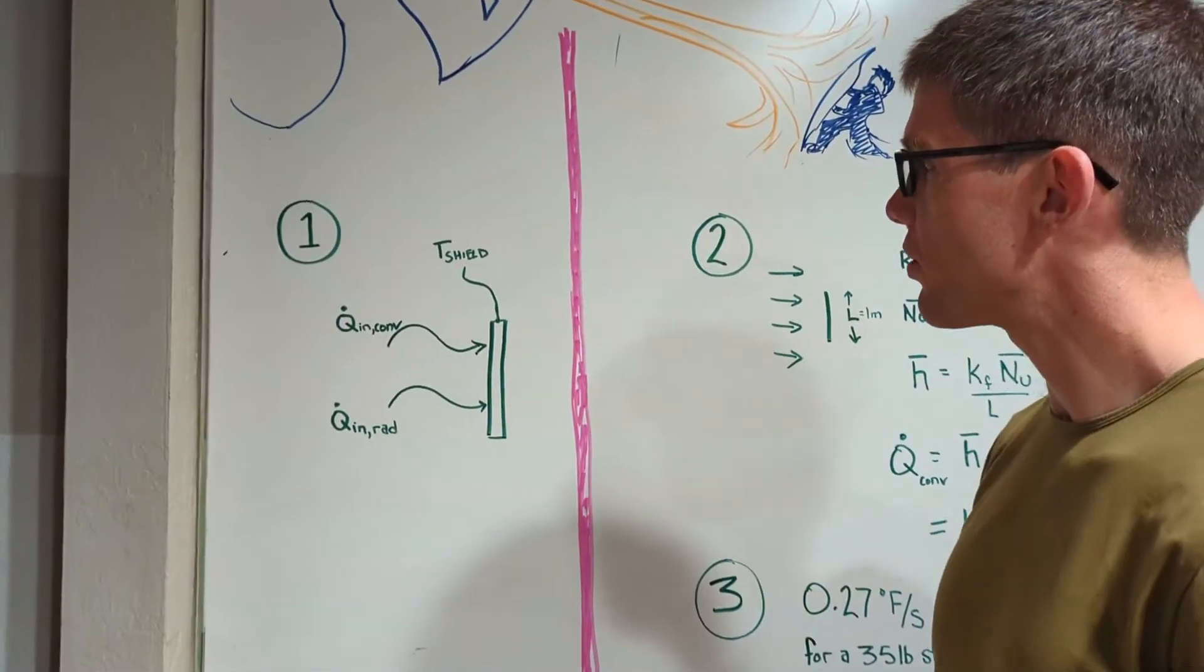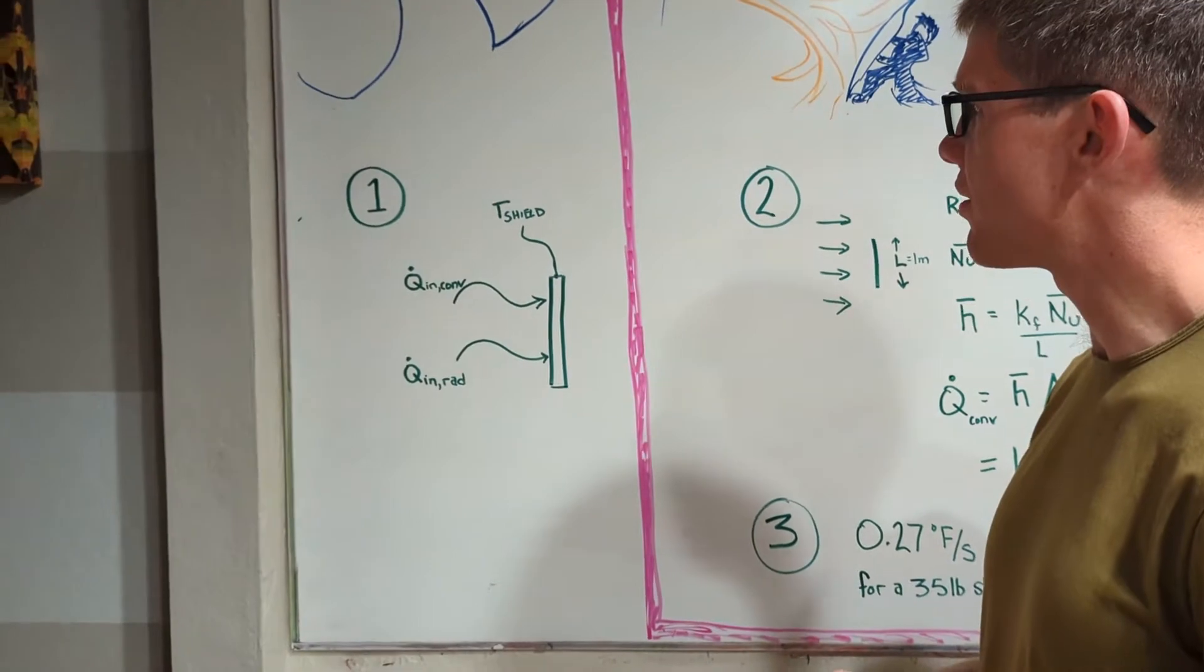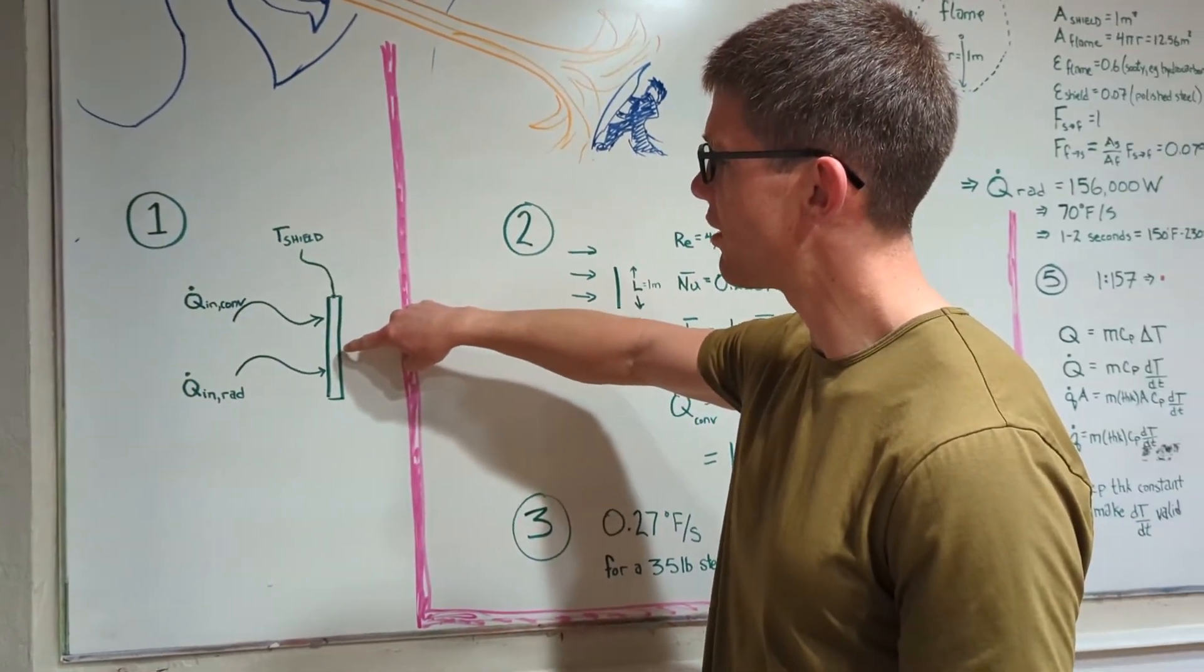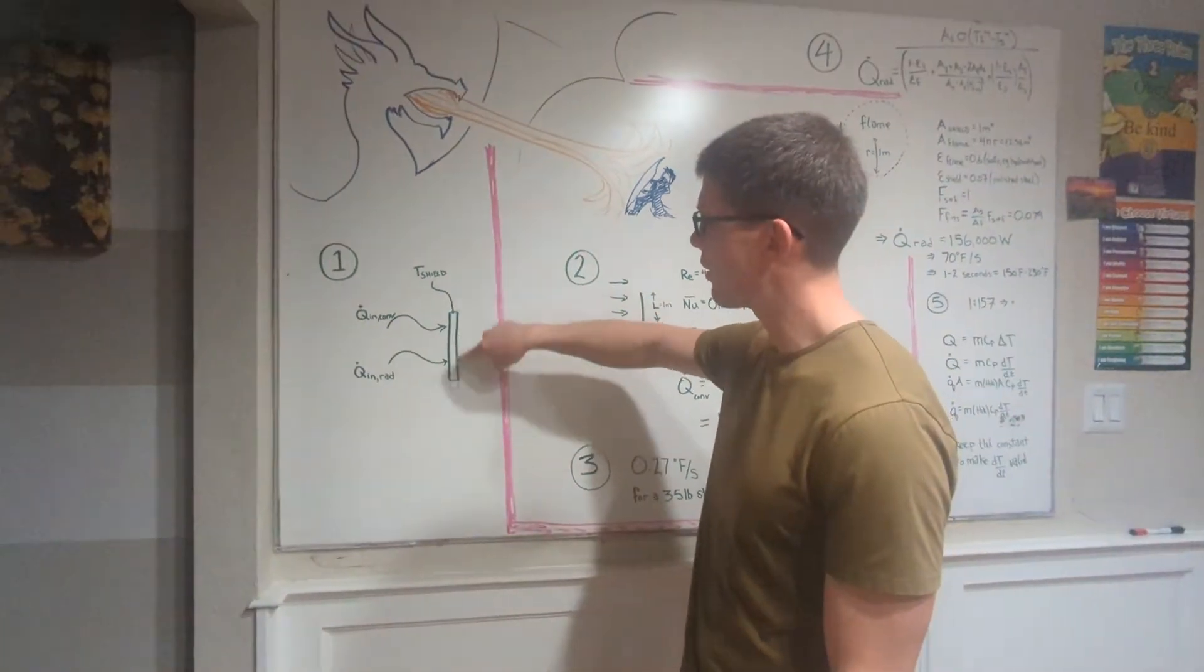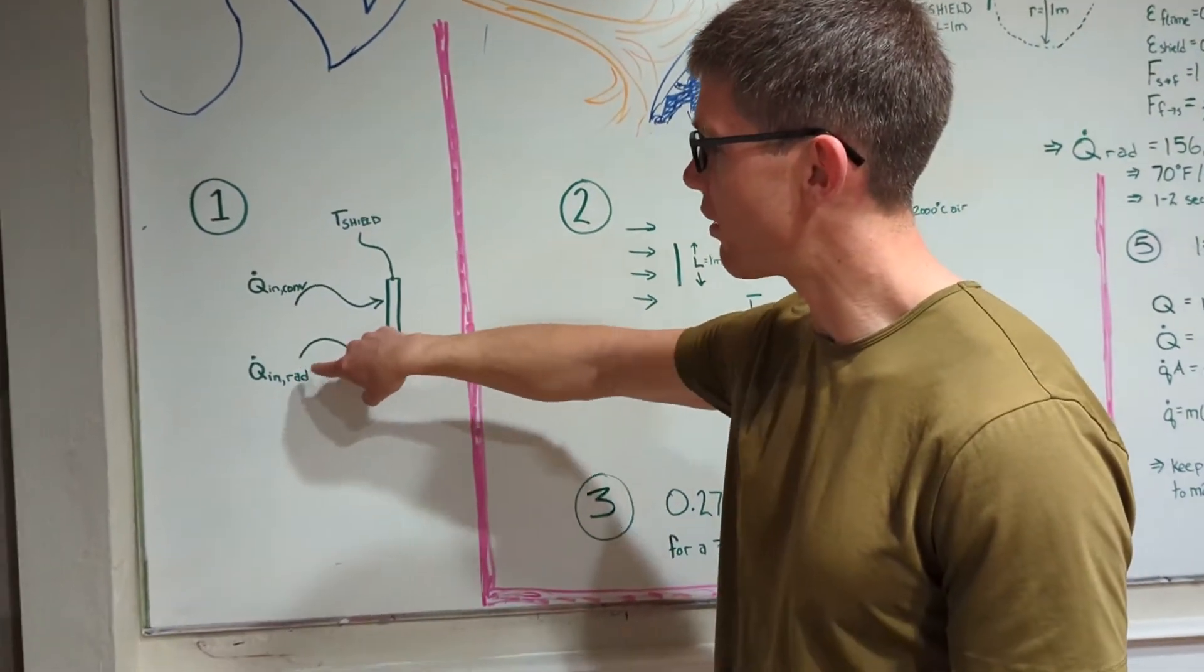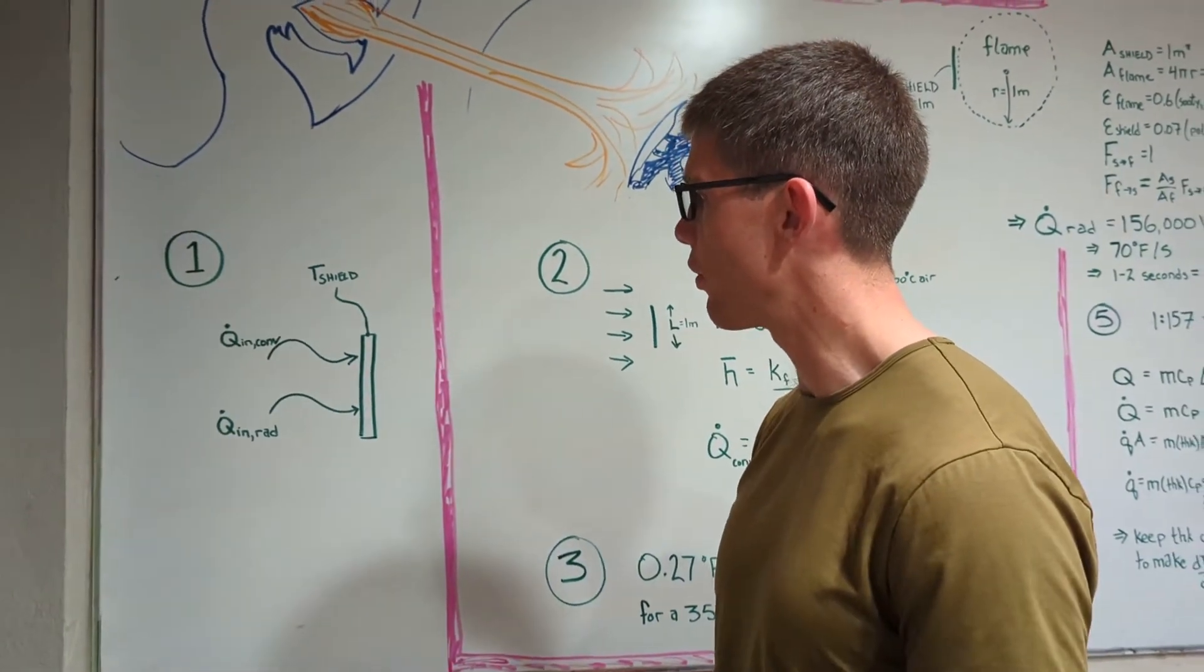So in our first blog post we broke it down into a very simplified version of the problem where we have a shield at a uniform temperature that has convection heat transfer and radiation heat transfer flowing into it.